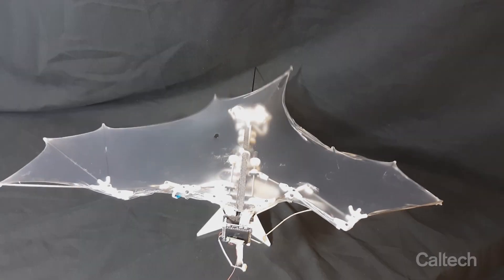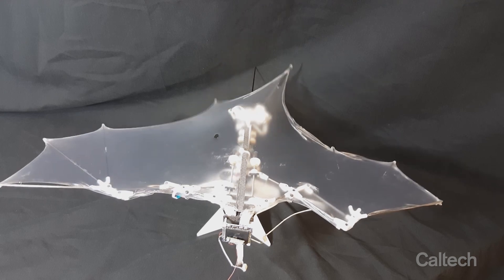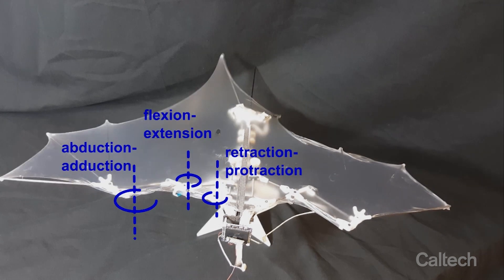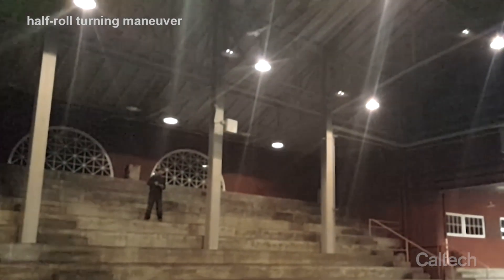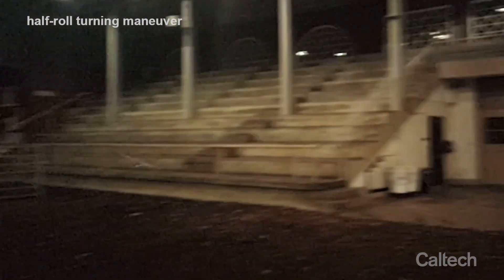The main wing of the B2 is supported by two independent wing folding joints. B2 performs turning maneuvers by independently controlling the folding motions of the left and right wings.